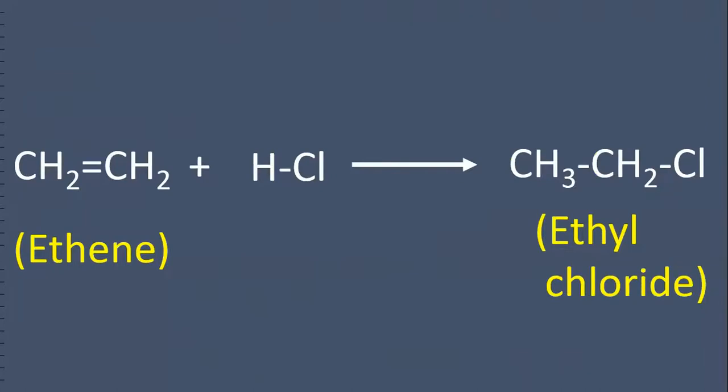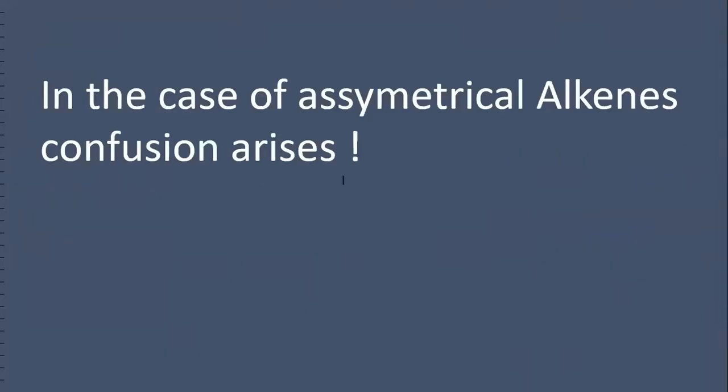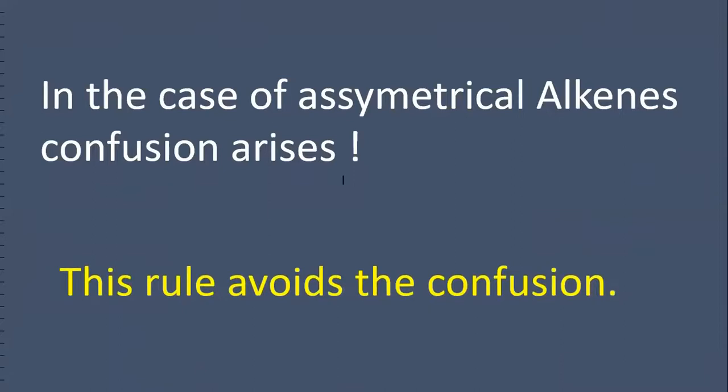When ethene reacts with HCl, we get ethyl chloride only. In the case of asymmetrical alkenes, confusion arises. This Markovnikov's Rule avoids the confusion.